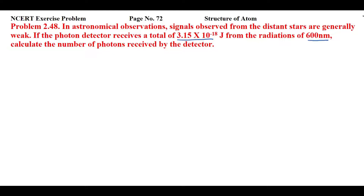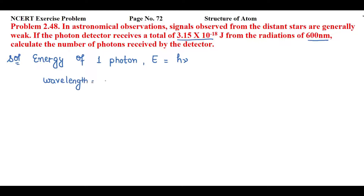First, we'll find the energy of one photon. Energy is represented as E and is given by the relation E = hν. Since we are given wavelength in this question, we need to modify the formula. We know that frequency can be represented by c/λ, so E = hc/λ, where λ is wavelength.